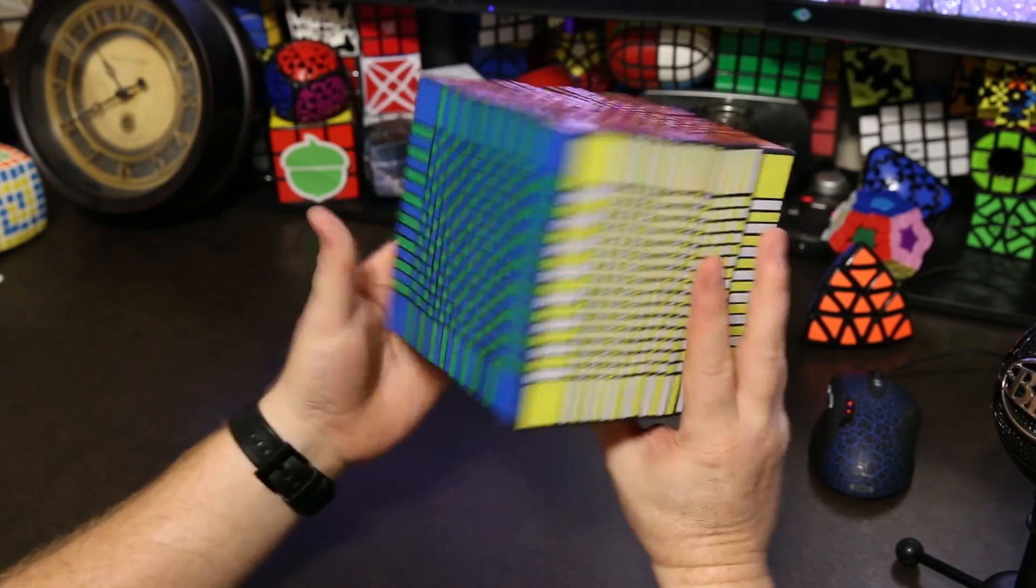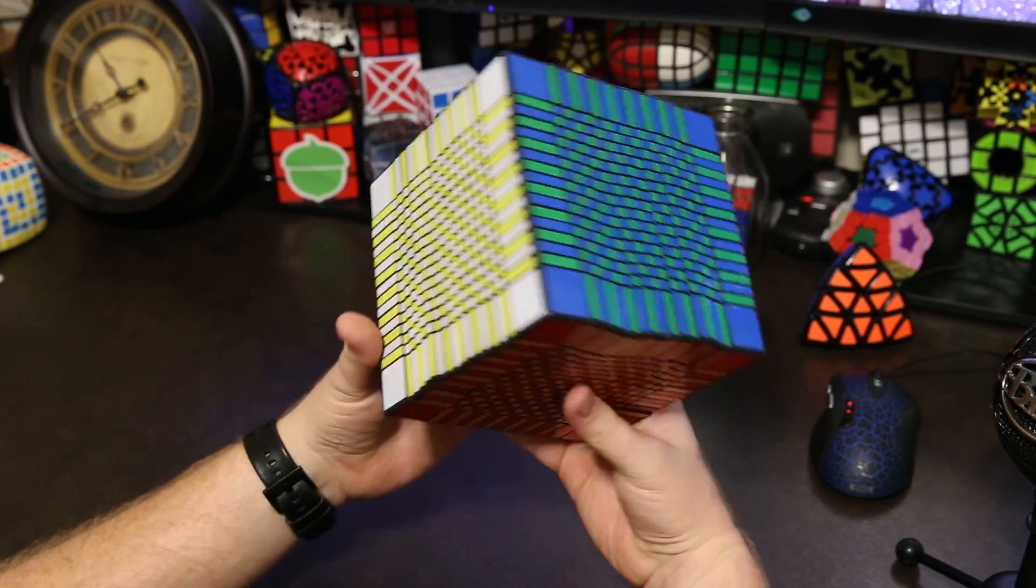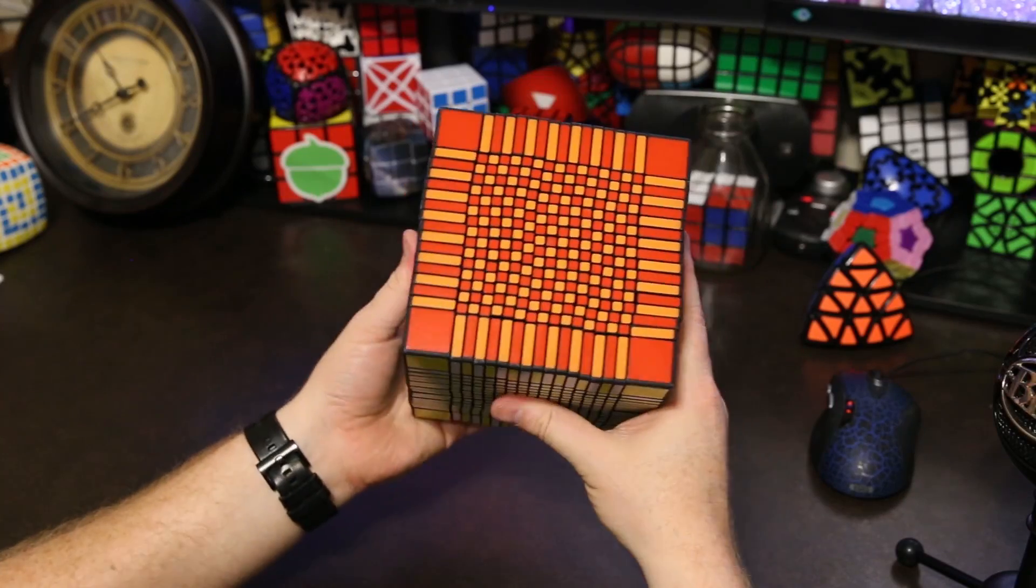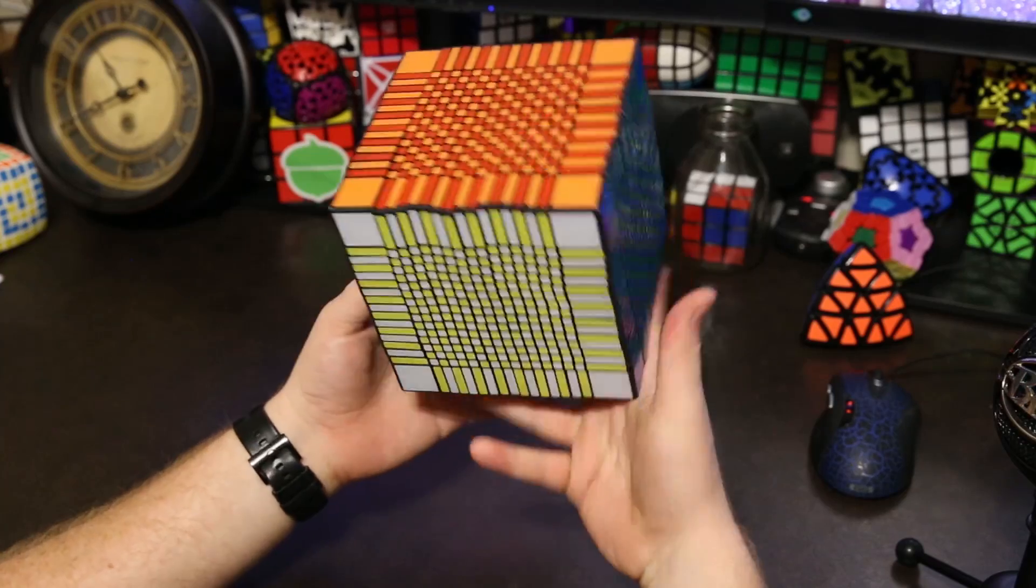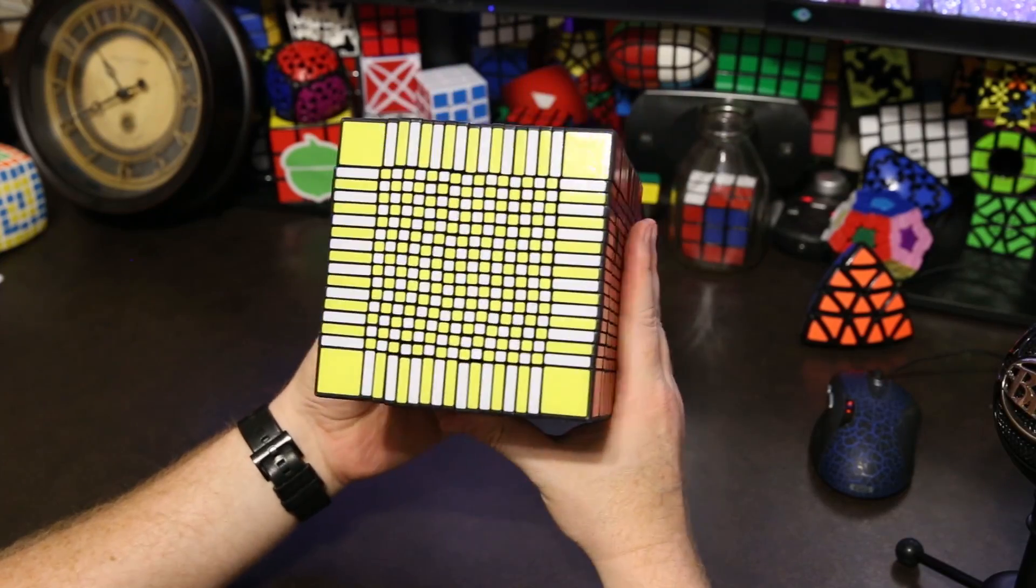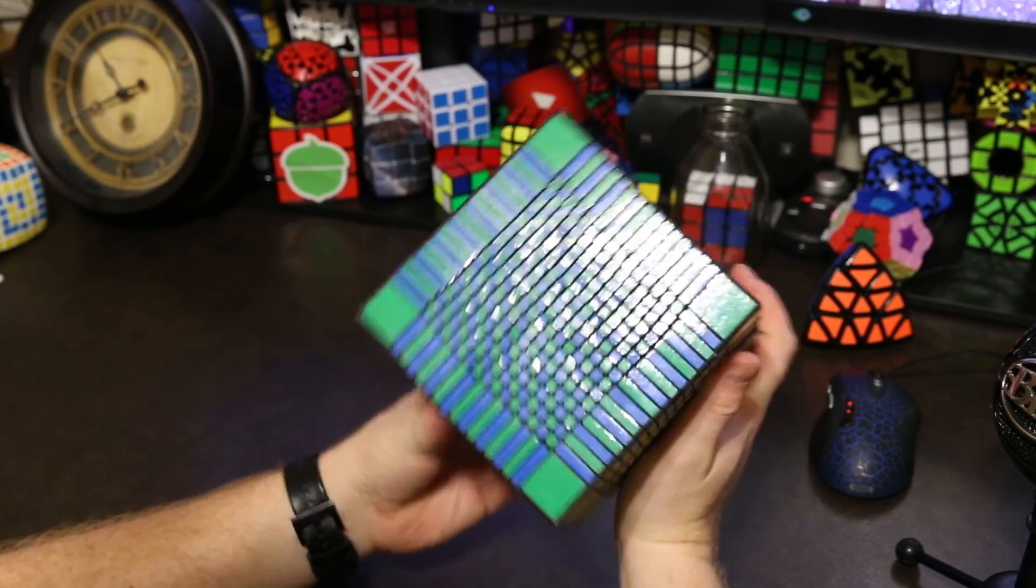Here's what a checkerboard pattern looks like on the 17 by 17. It's pretty cool, it's probably the easiest pattern to make on a 17 by 17. So yeah, let's move on to a tougher pattern, let's try the flower pattern.